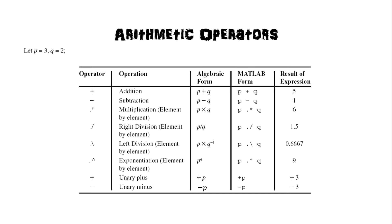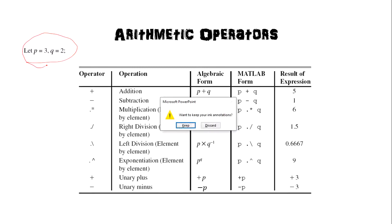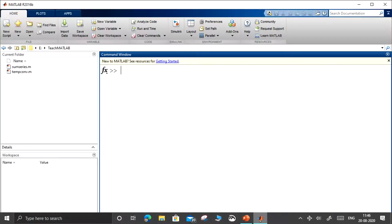Let us take an example. We are considering p equal to 3, q equal to 2. Let us consider these two variables p and q in our MATLAB command window and do all these arithmetic operations. So p equal to 3, q equal to 2.